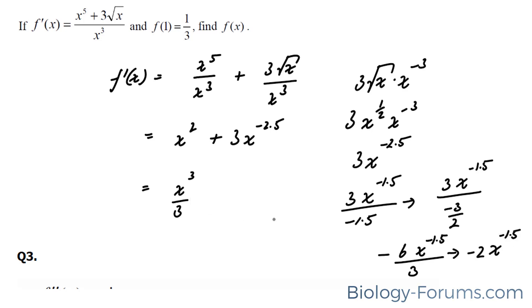This reduces to negative 2x to the power of negative 1.5. So we're going to place that right here, negative 2x to the power of negative 1.5 plus c. The next step is to evaluate this function at 1, and we know that at 1, it's going to be a third.